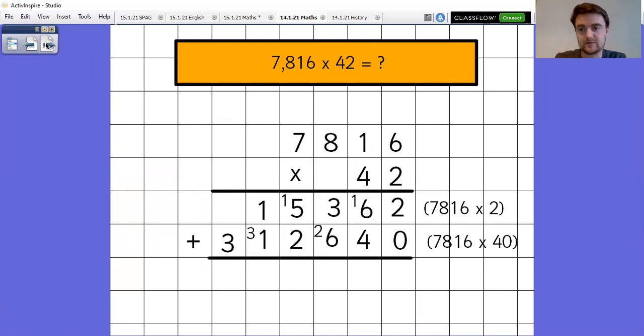Two add zero is two. Six add four is 10, so I exchange a one. Six add three, add one is 10, so I exchange a one. Five add two, add one is eight. One add one is two, and three is by itself over there. So we're left with 328,002, which is quite an unusual looking number.